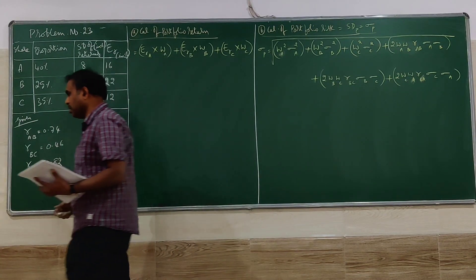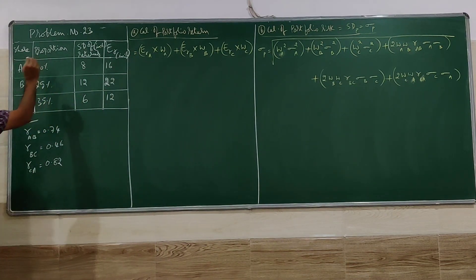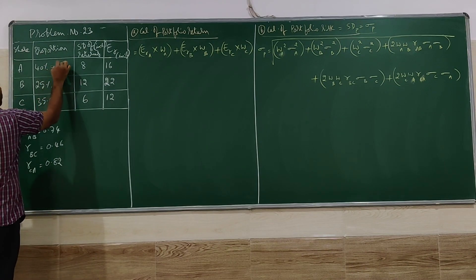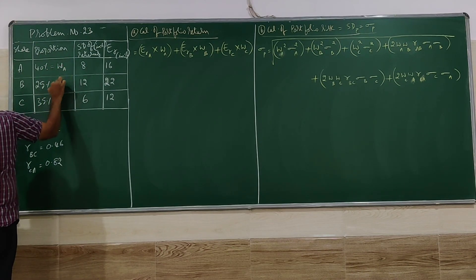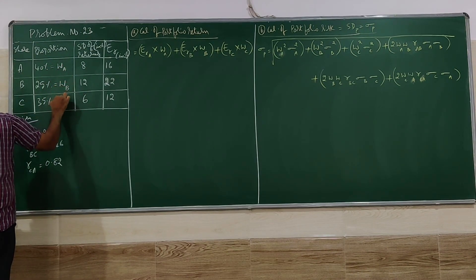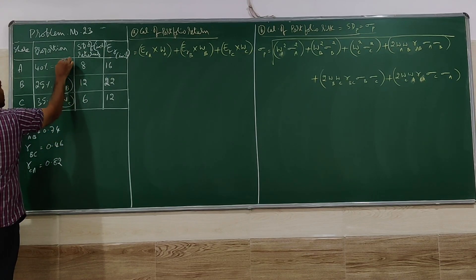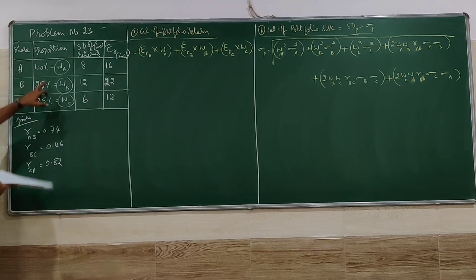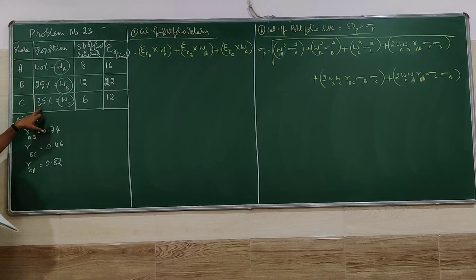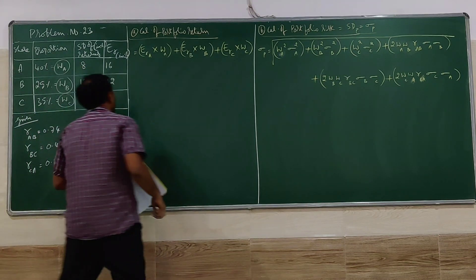Before we proceed further, we have to go for the proportion. That is the weight of A, weight of B, weight of C. So 40% will be 0.4, 25% will be 0.25, 35% will be 0.35. These will be the weights of A, B, C. We will proceed further for the calculation.